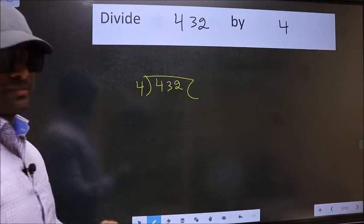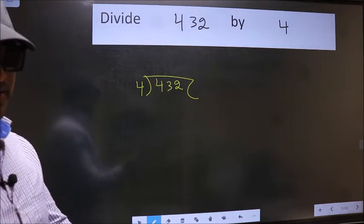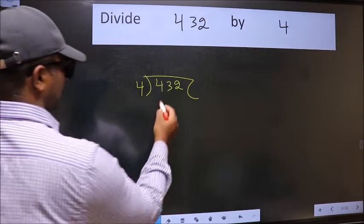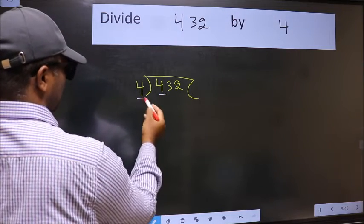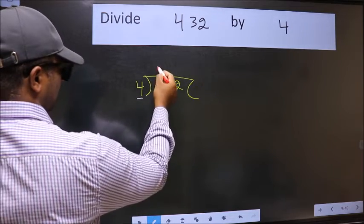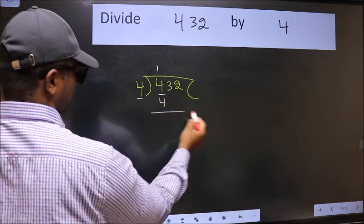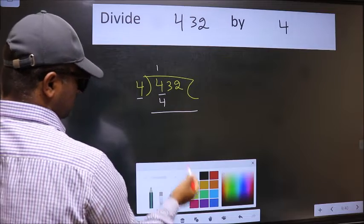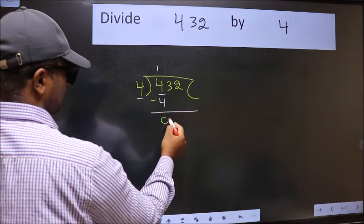This is your step 1. Next, here we have 4, here also 4. When do we get 4 in the 4 table? 4 once 4. Now we should subtract. We get 0.